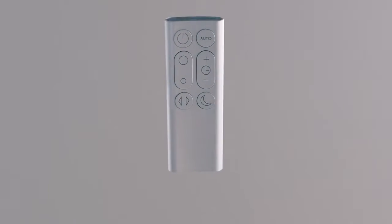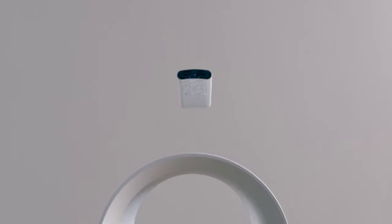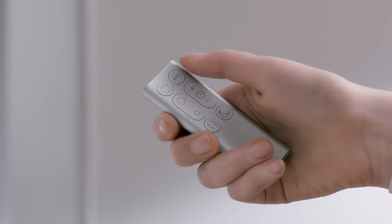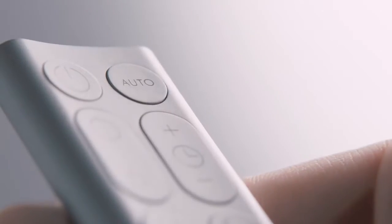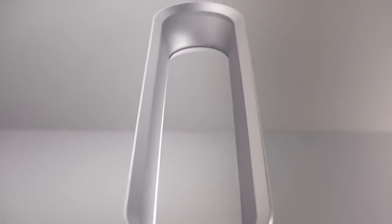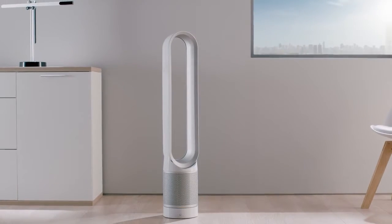The remote control is curved and magnetised, so it can dock on top of the loop for easy access. The integrated auto mode takes over cleaning the air for you, monitoring the air quality and reacting accordingly when the air becomes polluted.